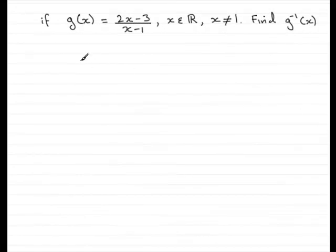Now, in this example, we've got the function g of x, where g of x equals 2x minus 3 all over x minus 1. x is any real number except 1. We're asked to find the inverse function of g.